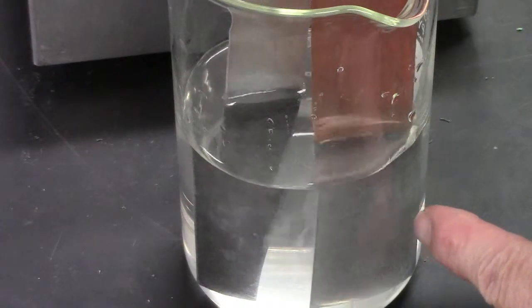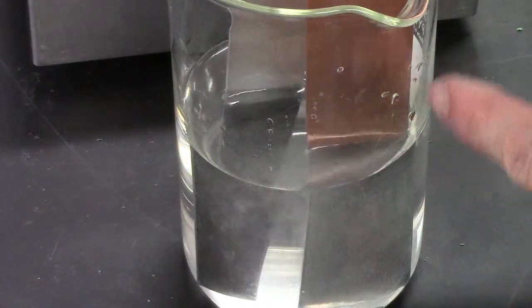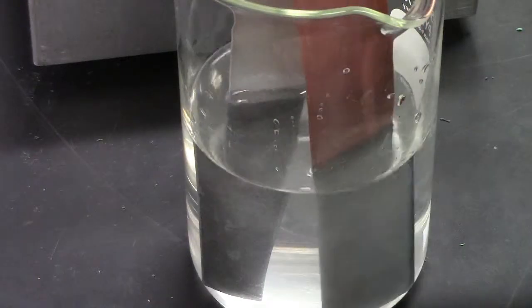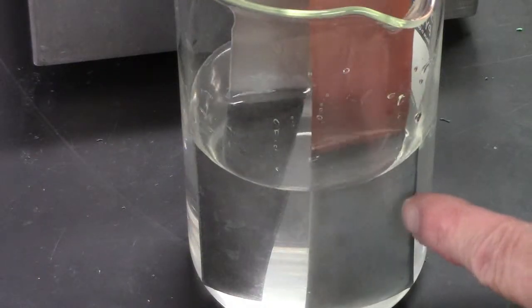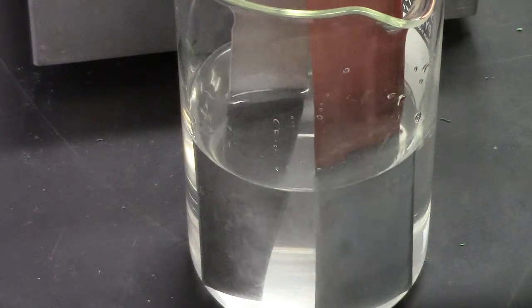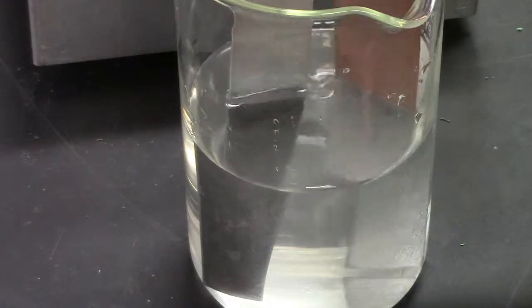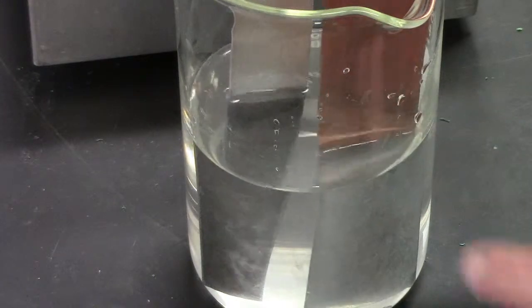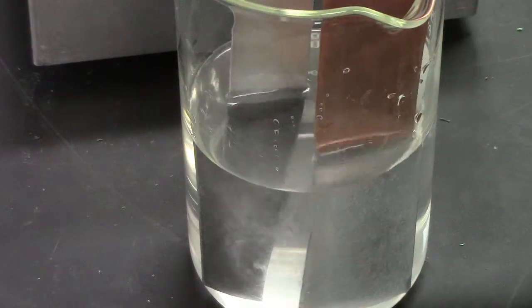You may be able to tell that the copper color is turning gray, silver gray, as the copper gets coated with zinc metal. So this is what is meant by zinc plating.